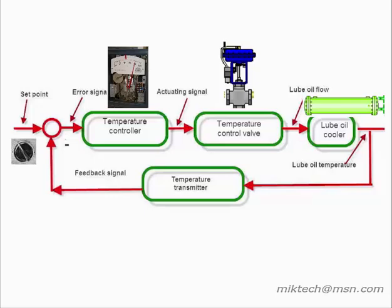The temperature transmitter senses the temperature of the lube oil as it leaves the cooler and sends an air signal that is proportional to the temperature controller. The temperature controller compares the actual temperature of the lube oil to the set point, the desired value.